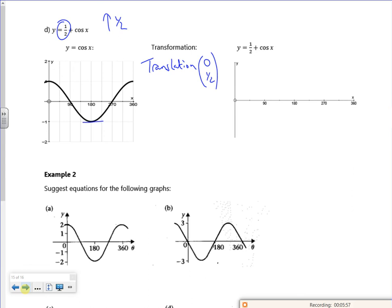So the whole graph goes up by a half. So instead of it bottoming out at minus one, it now bottoms out at minus a half. So it's all gone up a little bit. So that's quite hard to do really.